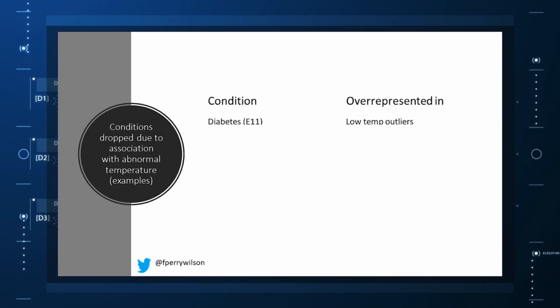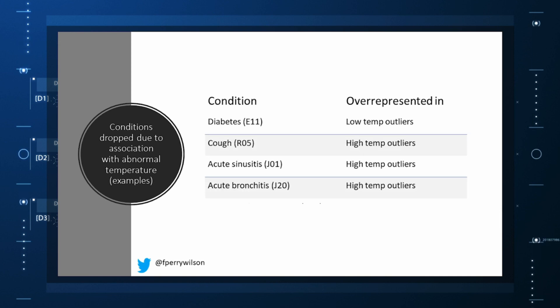Well, a lot of people actually. It turned out that diabetes was way over-represented in the outlier group. Although 9.2% of the population had diabetes, 26% of people with very low temperatures did. So now everyone with diabetes is removed from the dataset. While 5% of the population had a cough at their encounter, 7% of the people with very high temperature and 7% of the people with very low temperature had a cough. So everyone with cough gets thrown out.